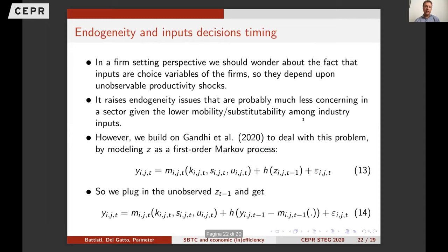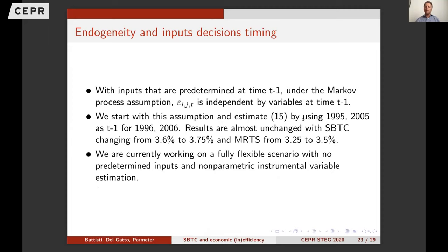There are identification issues stemming from the firm production function literature. We should consider that input decisions are linked to productivity shocks. We build on the second step of Gandhi-Navarro-Rivers and consider that the Zeta additive term can be modeled through a first-order Markov process, plugging this in and treating all inputs as predetermined at time t minus one. Results are more or less the same. We are currently working on a more flexible scenario with non-predetermined inputs and non-parametric instrumental variable estimation.